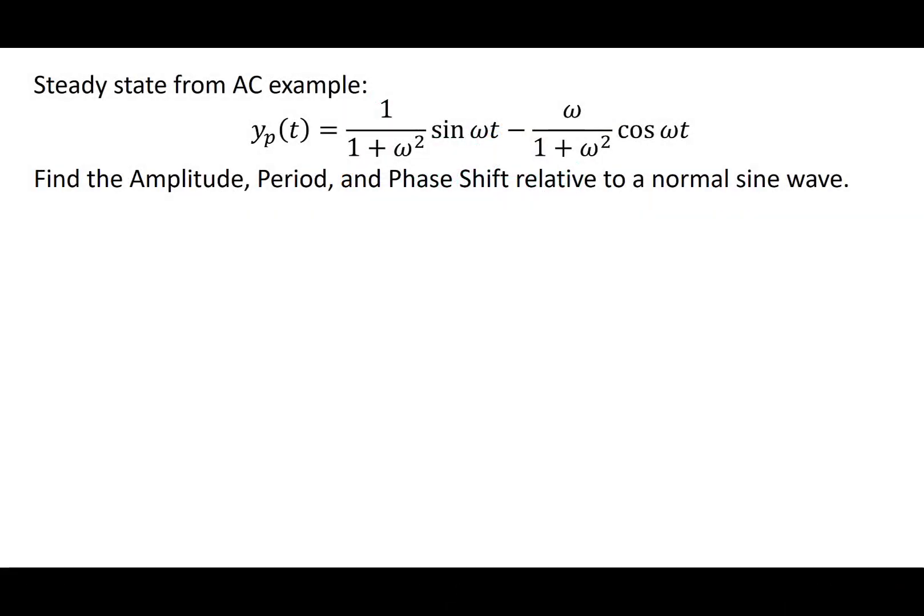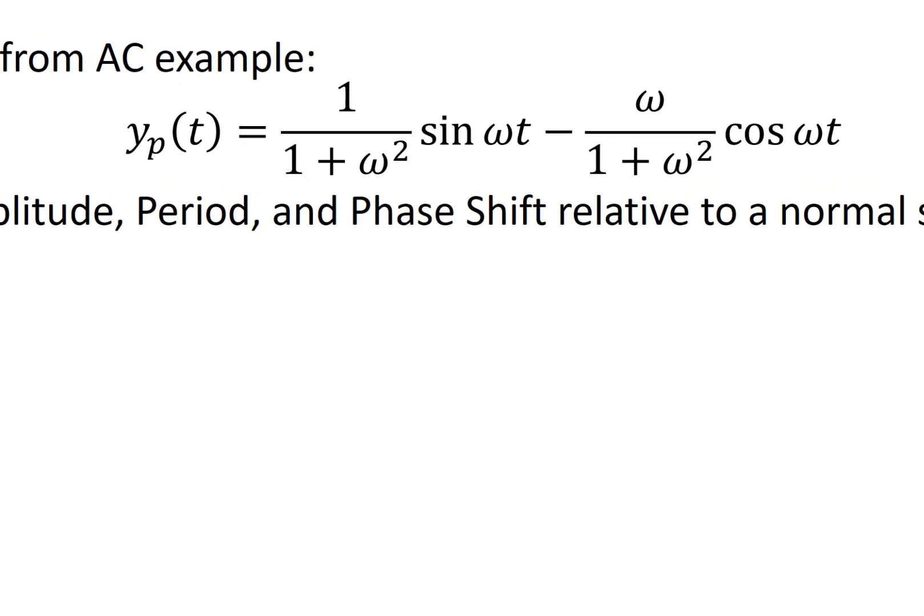Let's apply the formulas we just derived to calculate the amplitude and phase shift for the steady-state solution to the alternating current RC circuit. In that example we derived a formula for the particular solution which ended up being the steady-state solution as 1/(1+ω²) sin(ωt) - ω/(1+ω²) cos(ωt).